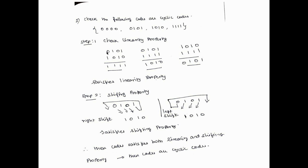Now check whether the following codes are cyclic codes. We have four values: 0000, 0101, 1010, and 1111. Neglecting 0000, we take the second and third values and add them, getting 1111, which is in the input code set. Then taking the second and fourth terms and adding them gives 1010, which is also in the input set. Adding the last two digits gives a result also in the input set. So this code satisfies the linearity property.